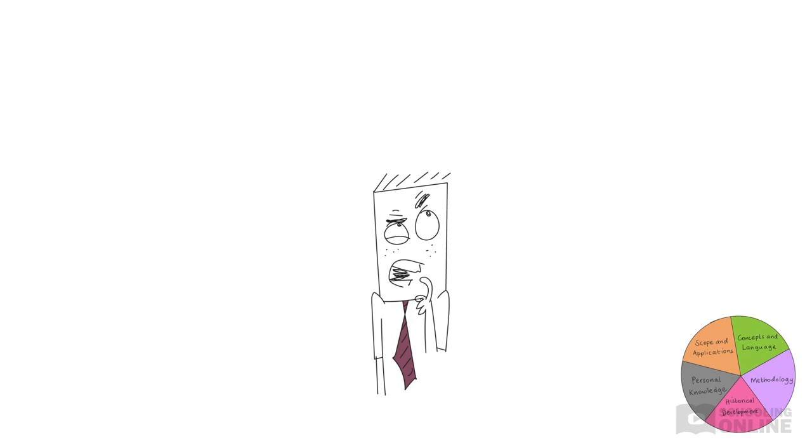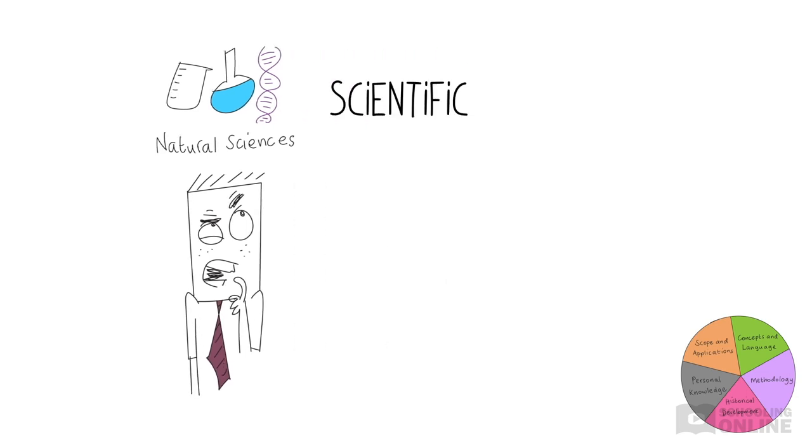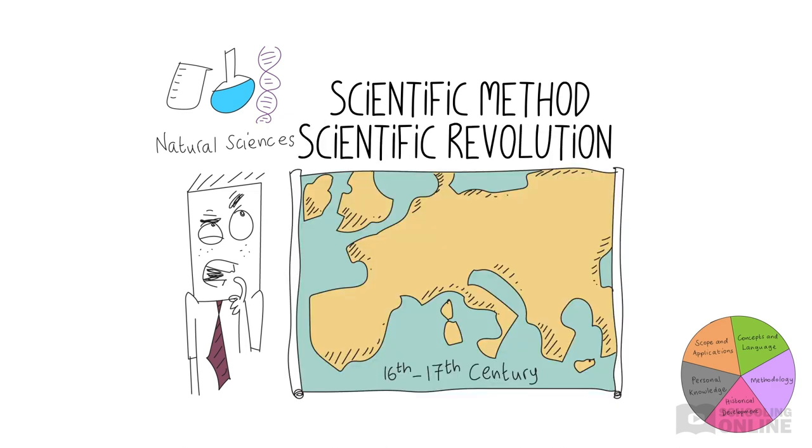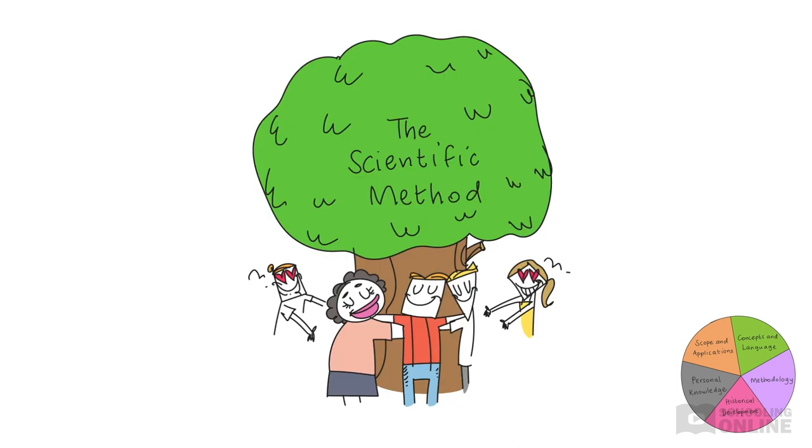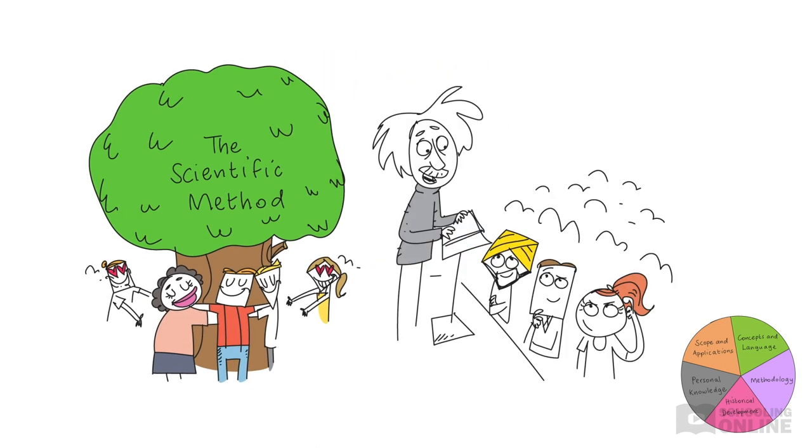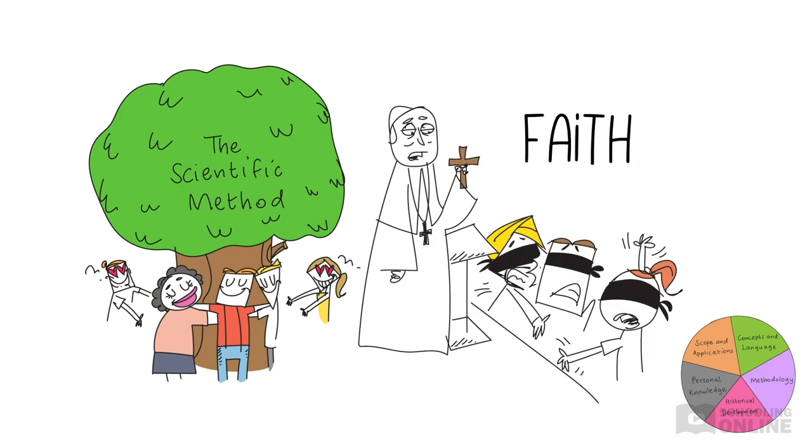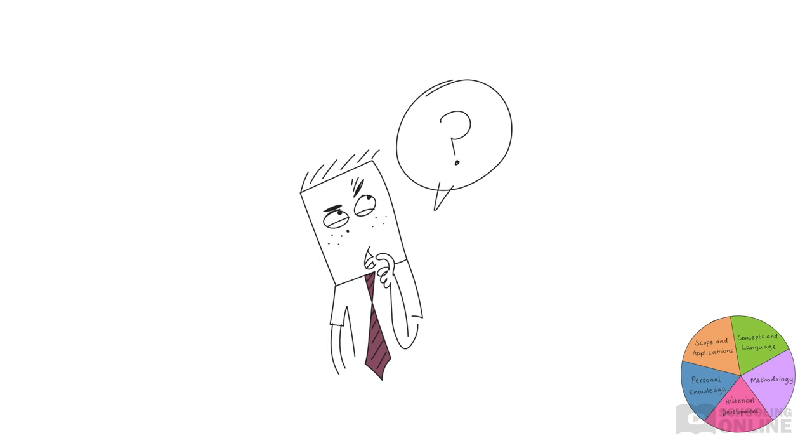To further understand the scientific method, let's delve into the historical development of the natural sciences. The scientific method, as we know it, only emerged during the scientific revolution in 16th and 17th century Europe, starting with scientists like Sir Francis Bacon. Over the years, as more and more people embraced the scientific method, people's views of the world changed radically. Especially in the West, many started to value scientific reasoning as a better way of understanding the world than blindly following religious faith. Do you think that faith can ever play a role in the natural sciences?